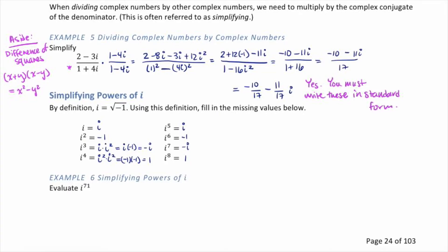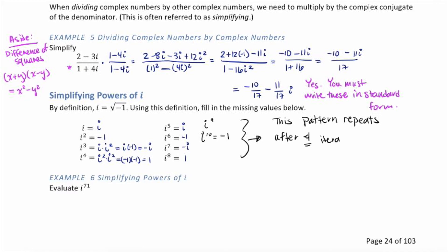What do you notice about this pattern? We have i, negative 1, negative i, 1 — and then we're back to i, negative 1, negative i, 1. The pattern repeats every 4 iterations. So i to the ninth is just i, i to the tenth is negative 1, i to the eleventh is negative i, and i to the twelfth is 1. If you had to guess, i to the tenth equals negative 1 — correct!